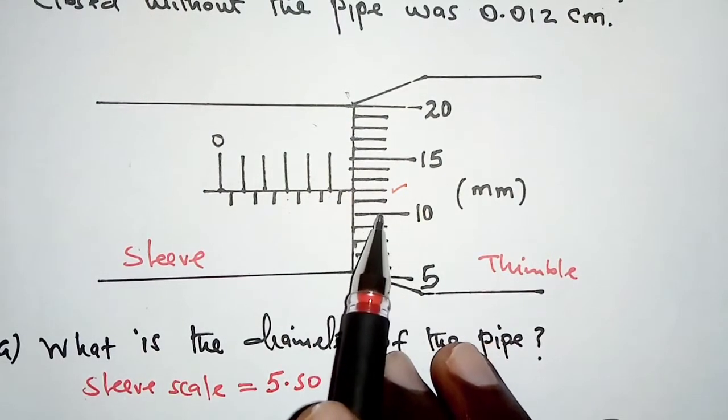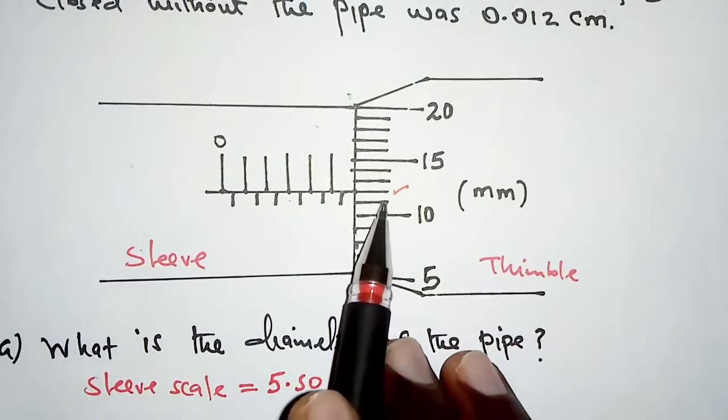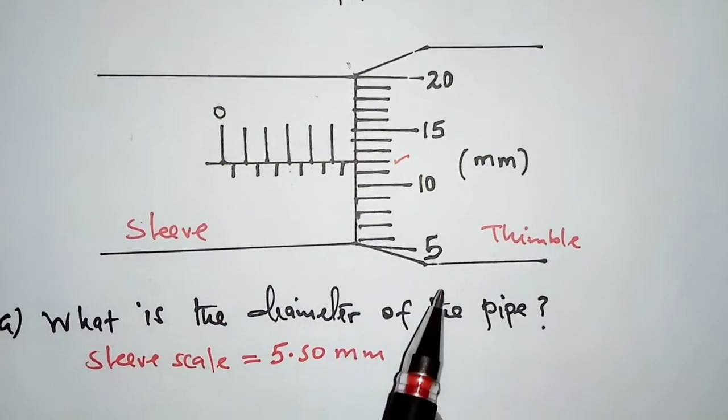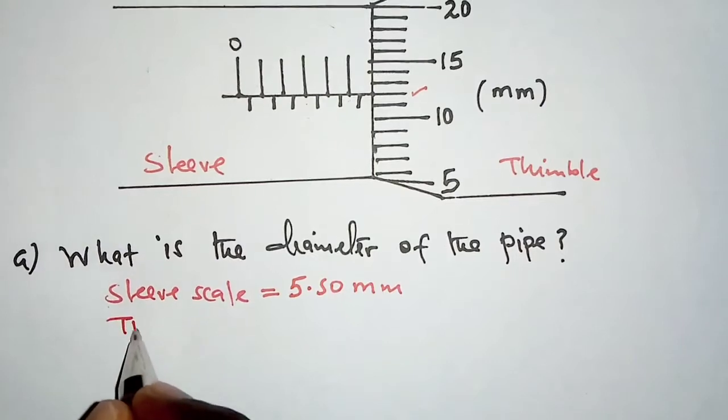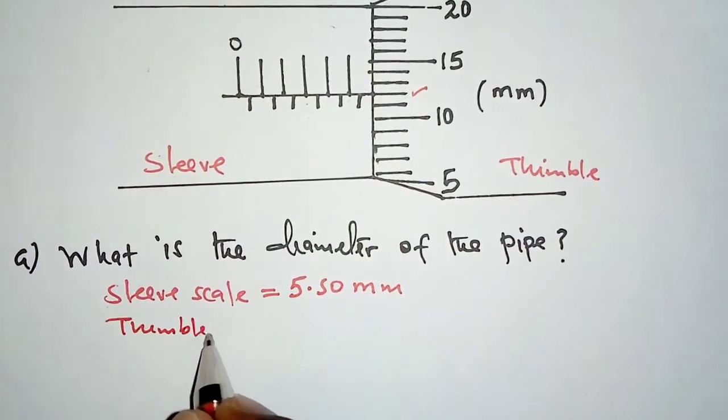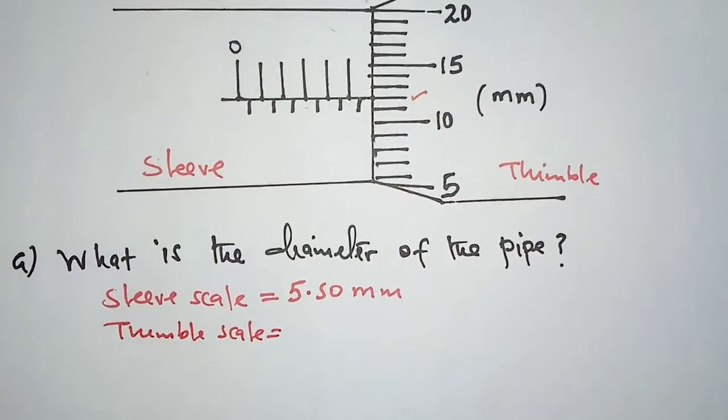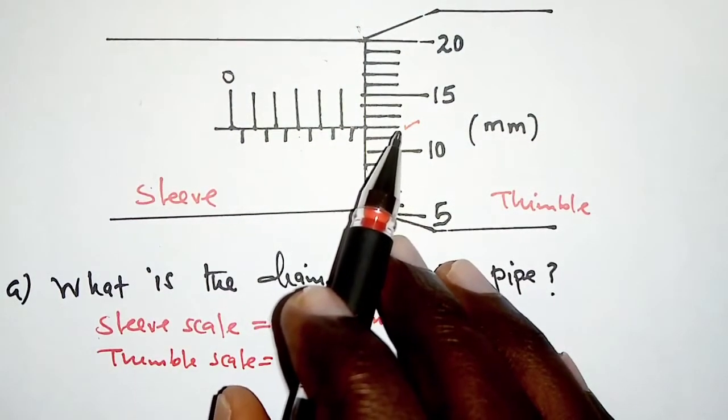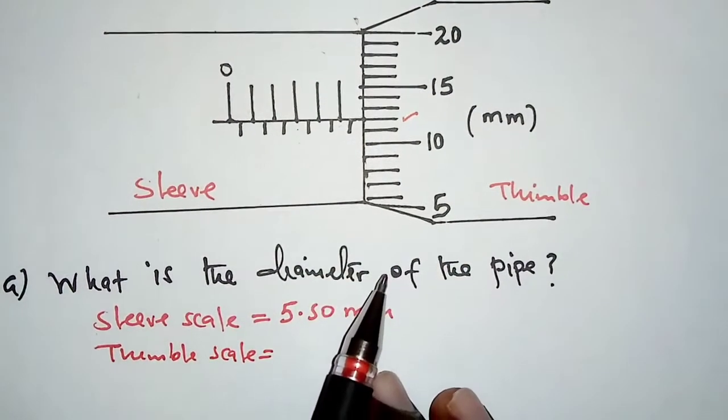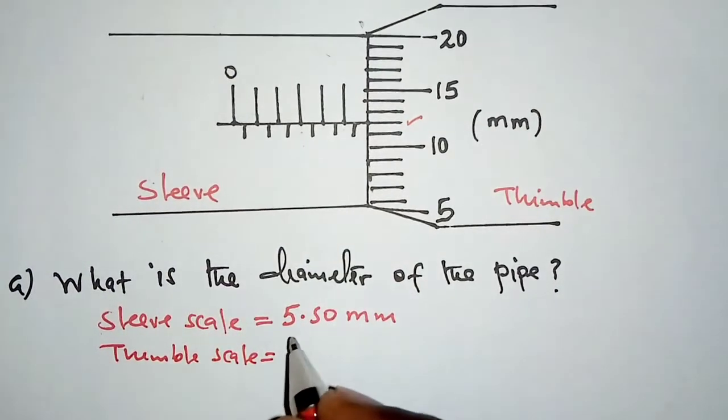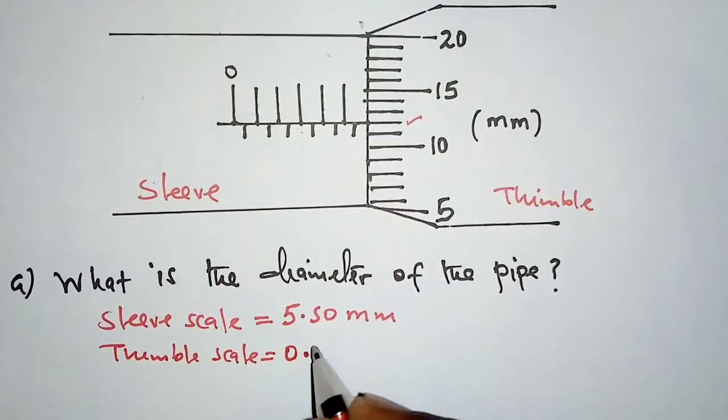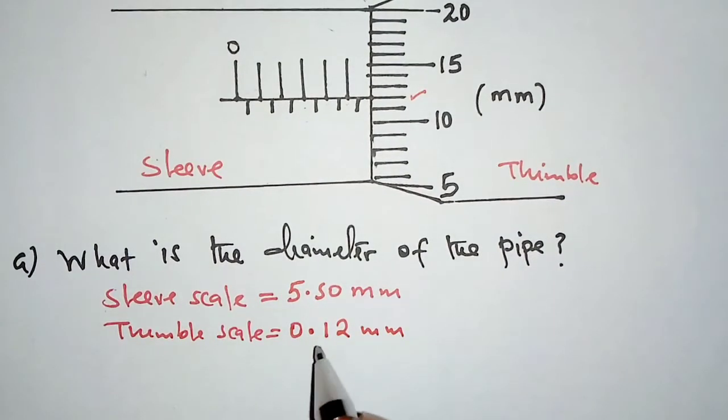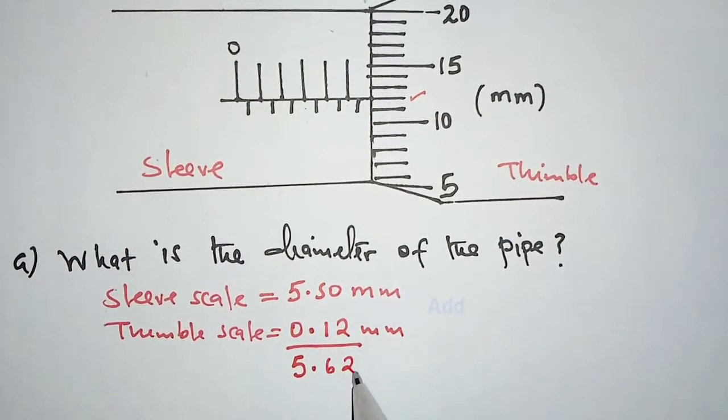If this is 10, it increases upwards: 10, 11, 12. That is the 12th mark. For the thimble scale, that reading we have gotten, we have to multiply it by 0.01, and that means our reading is 0.12 millimeters. We have multiplied 12 by 0.01, and then the reading we get here is 5.62 millimeters.